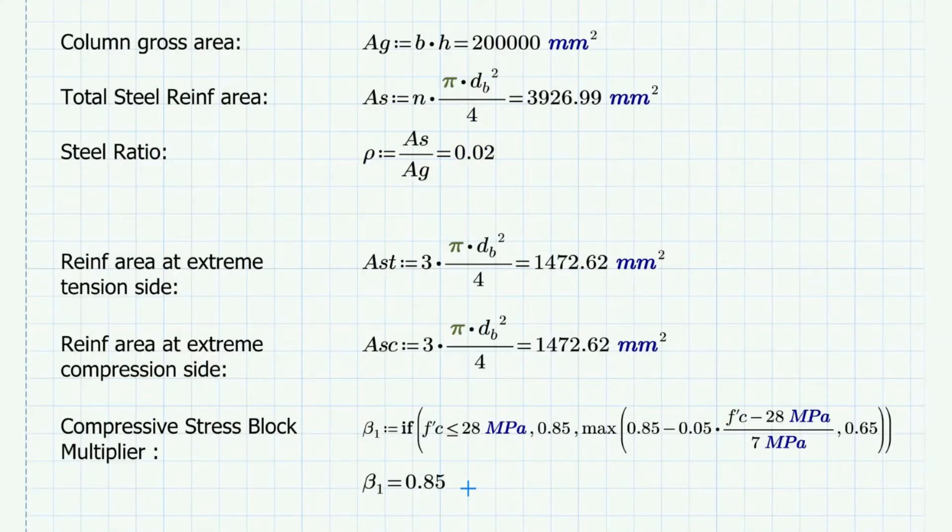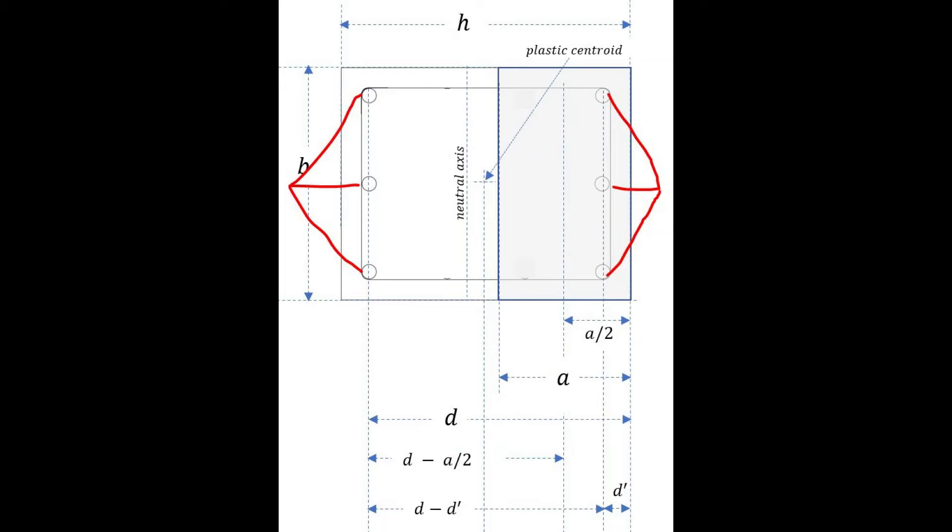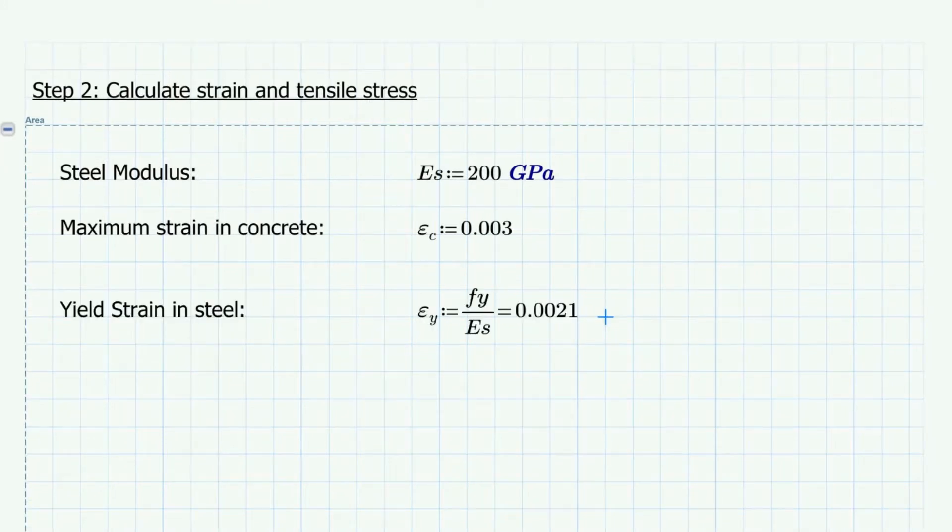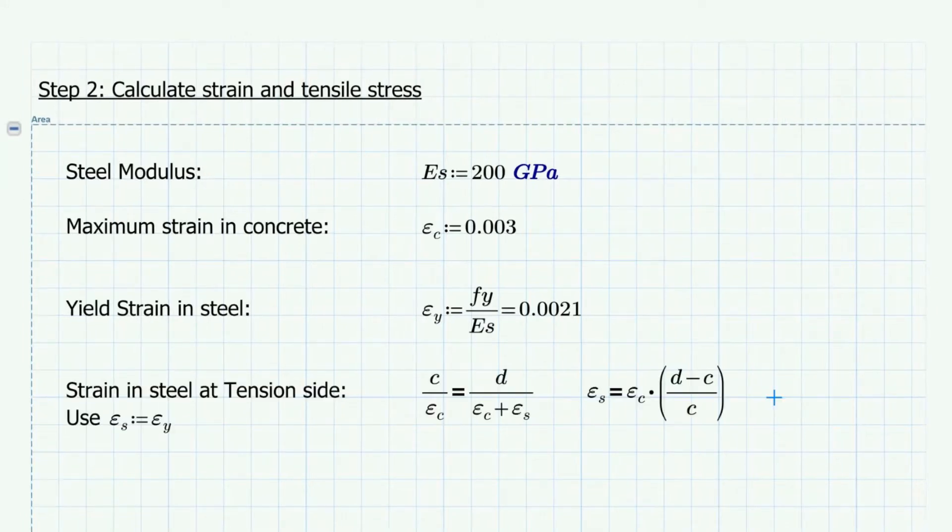We calculate the steel areas at the extreme tensile side and at the extreme compression side. Next step is to calculate the strain values and the tensile stresses. The strain in steel at yield point is calculated as Fy over Es, which gives a value of 0.0021.